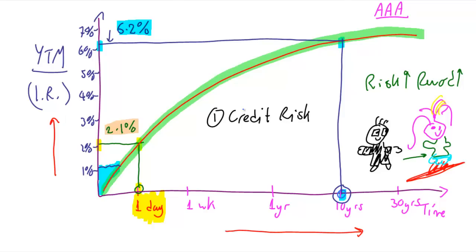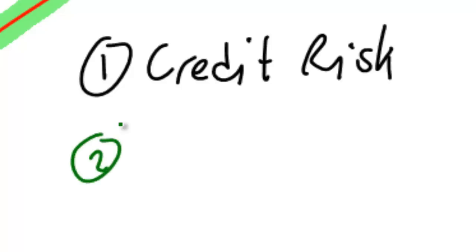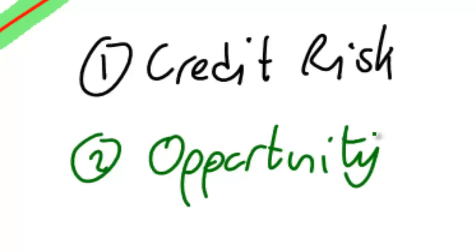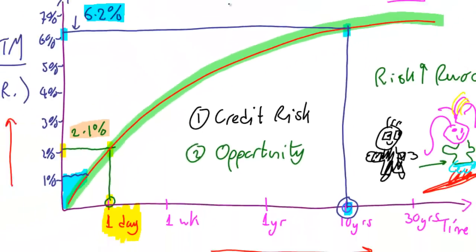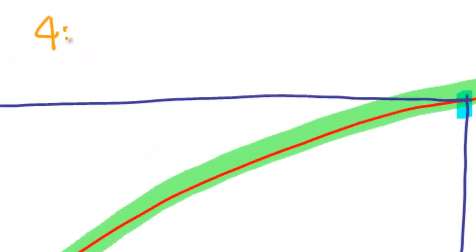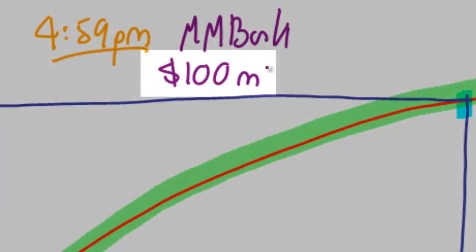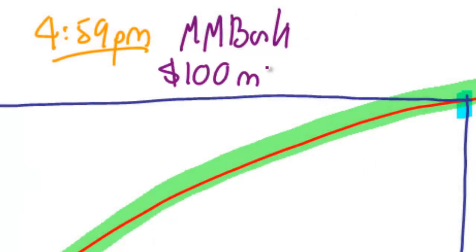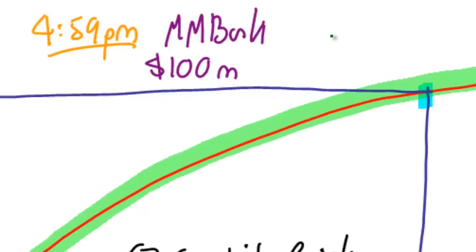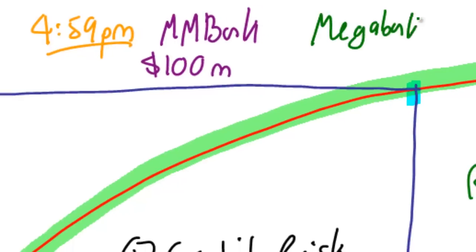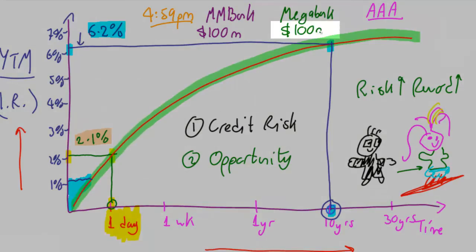The second reason is more to do with liquidity. This is liquidity preference theory. And the idea is based on the lack of opportunities if I lend to you for a long time. I want you to imagine this. It's 4:59pm on a Monday afternoon. And I am Mithril Money Bank. And I have $100 million sitting in my pocket and I don't know what to do with it. I've got one minute to decide what to do with it. You phone me up. You're Megabank. And for whatever reason, you require $100 million for one day.